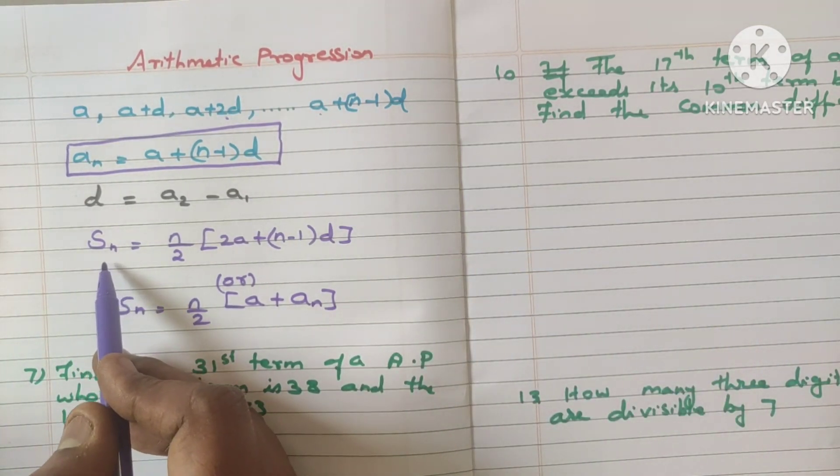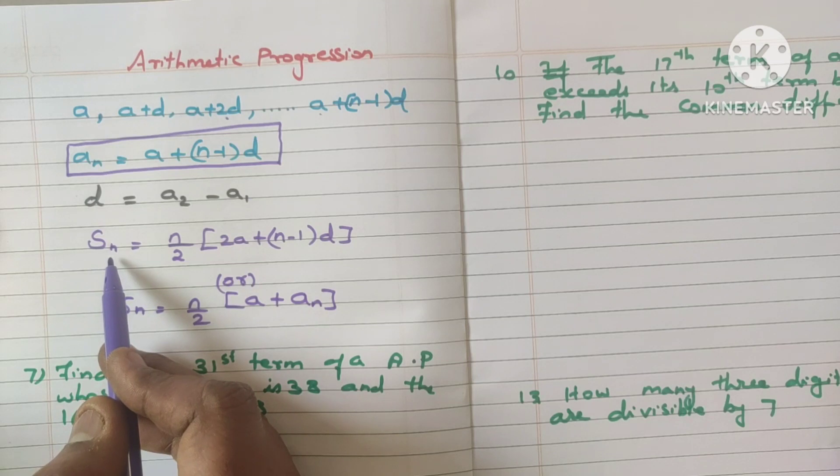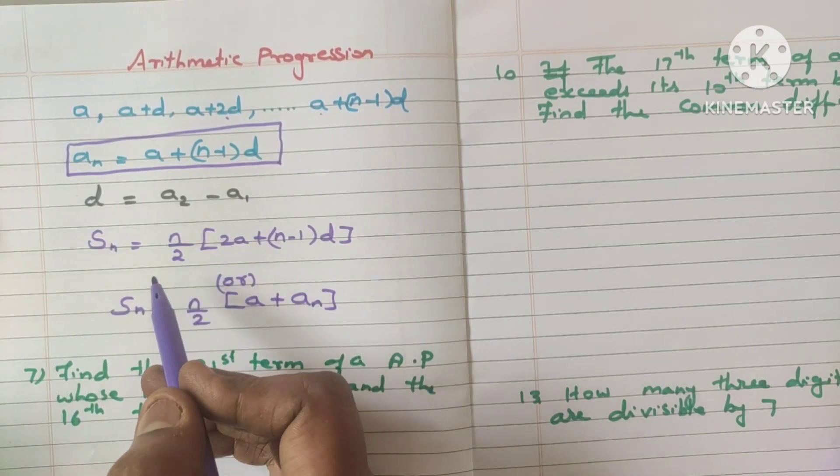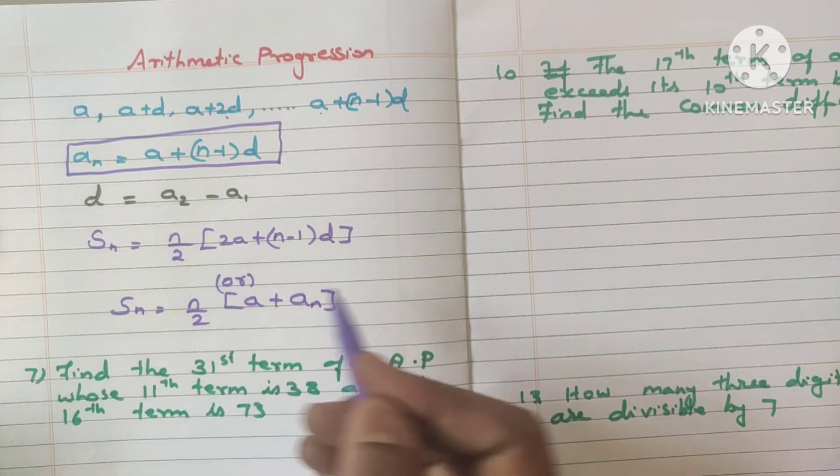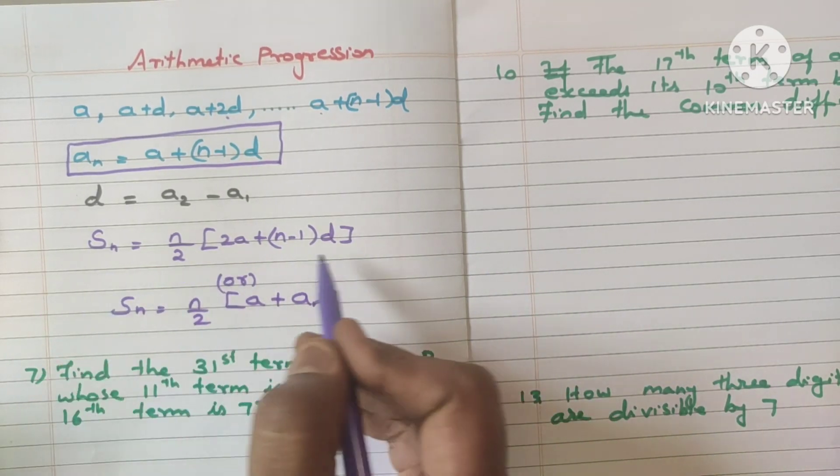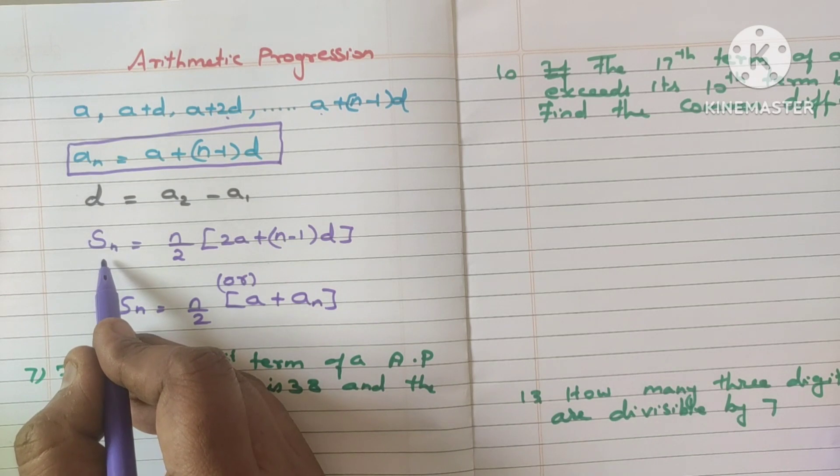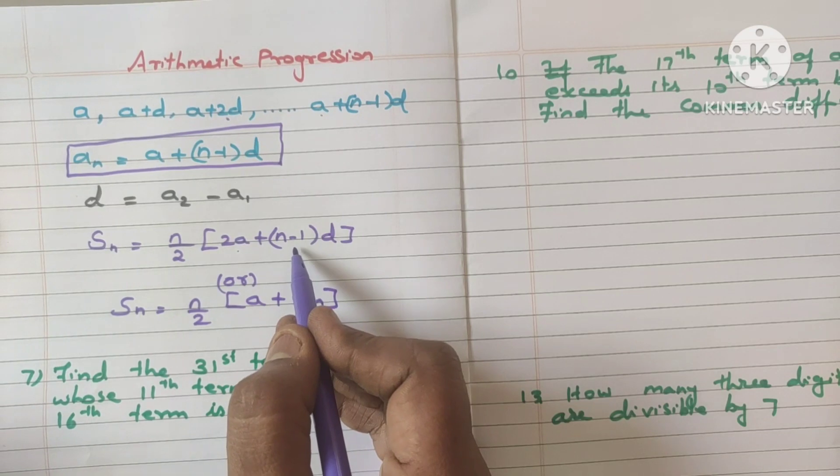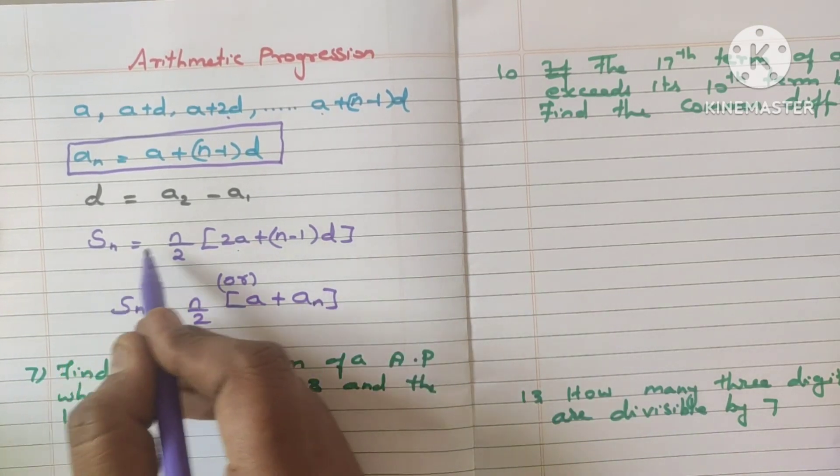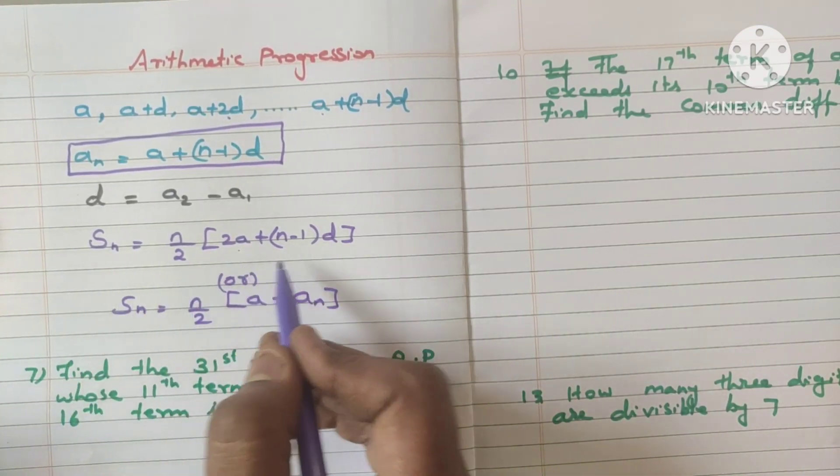Next, we will be using the sn formula. Sn is nothing but the sum of the term. For example, sum of 10 term means first term plus second term plus third term so on. To add the 10 terms, the formula is sn is equal to n divided by 2 into 2a plus n minus 1 into d. To find the sum of the term, we should use this formula.